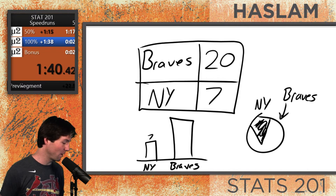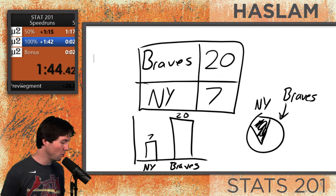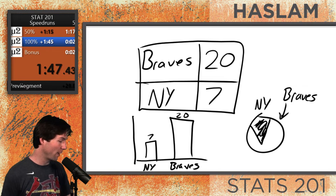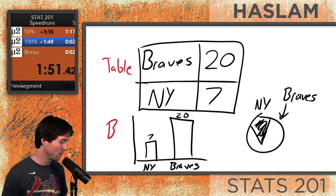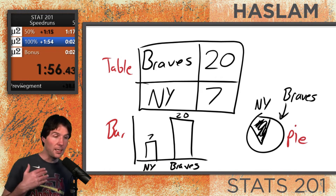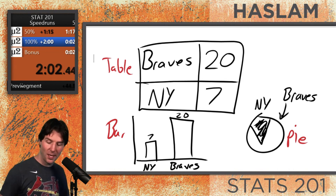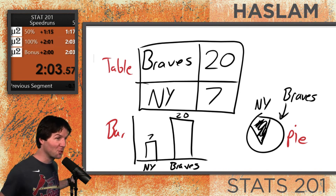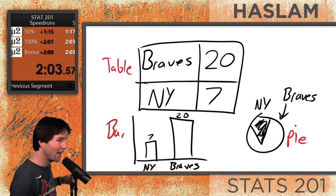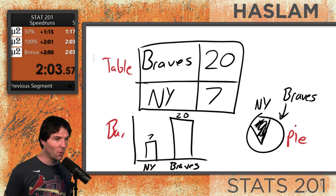If you notice right here, this might have seven observations and 20, because that's how many we have. What you should know is that the table, the bar chart, and the pie chart are all doing what? A table, a bar chart, and a pie chart all display the same type of data. And that's it — we did our first speed run in two minutes. These are univariate categorical displays of data: a table, a bar chart, and a pie chart.